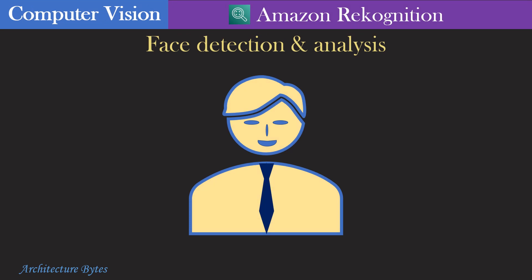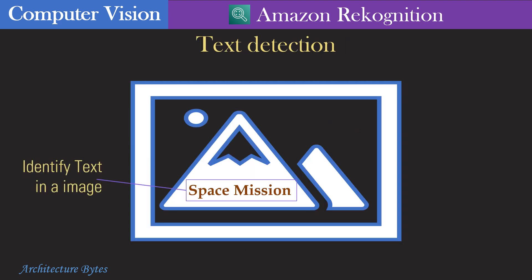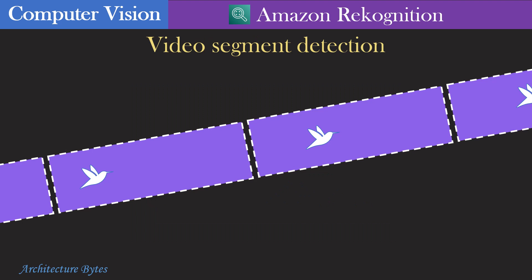Amazon Rekognition can be used for image recognition and video analysis. Without having to build machine learning models and infrastructure from scratch, you can add pre-trained or customized computer vision APIs to your applications. Some example use cases are face recognition, text detection, and video segment detection. Analyze images and videos within seconds and pay only for what you analyze.